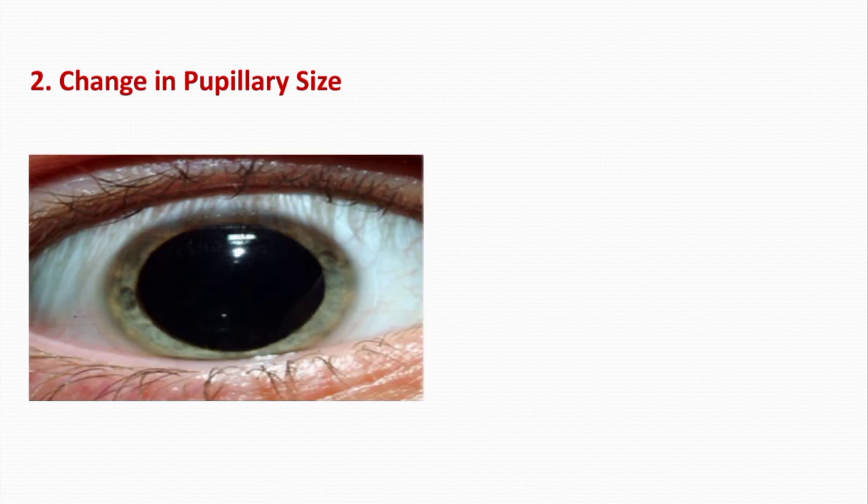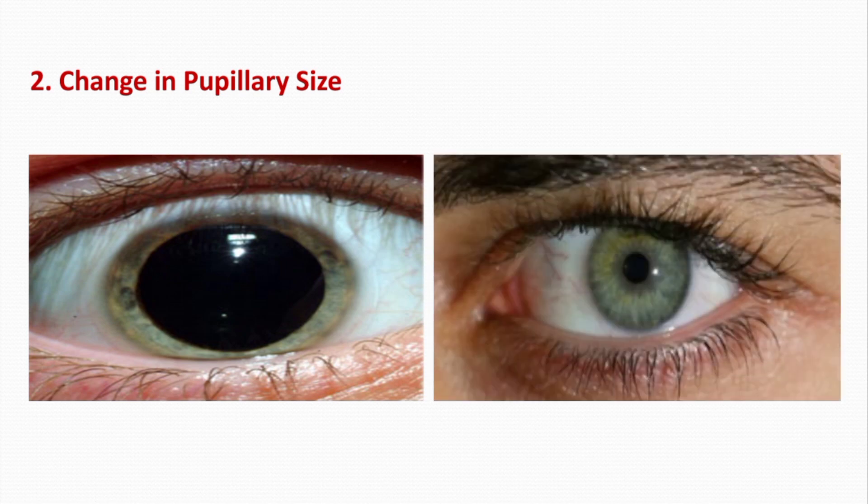The next mechanism is change in the size of the pupil. We know that pupil size increases in the dark and decreases in the light. This can cause adaptation of approximately 30-fold within a fraction of a second.